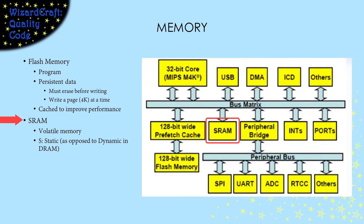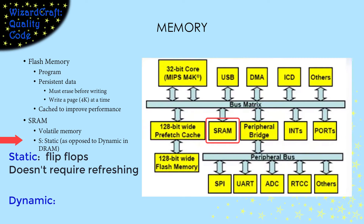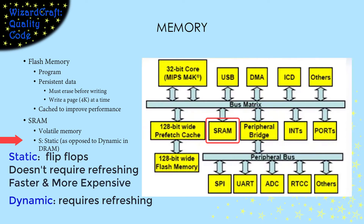The other kind of memory PIC32 chips have is SRAM, which stands for Static Random Access Memory. RAM means we can read or write any word at any time, but this data is volatile, meaning it does not persist through loss of power. SRAM is built using flip-flops, so as long as we have power, what we wrote will last. DRAM, on the other hand, has to be refreshed to not lose its information. This means SRAM is faster and more expensive than DRAM, so it's only used in places with smaller memory sizes. For example, in a PC CPU, the caches near the processor are usually SRAM, but the main memory is usually DRAM.